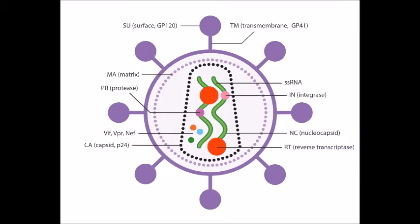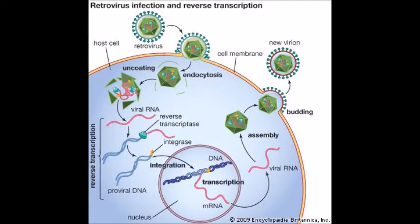When retroviruses enter the cell, they use an enzyme called reverse transcriptase to create DNA from its single-stranded RNA template. The DNA is transferred into the host's DNA and transcribed along with the host's other genes, meaning that the host makes proteins using the virus's DNA.